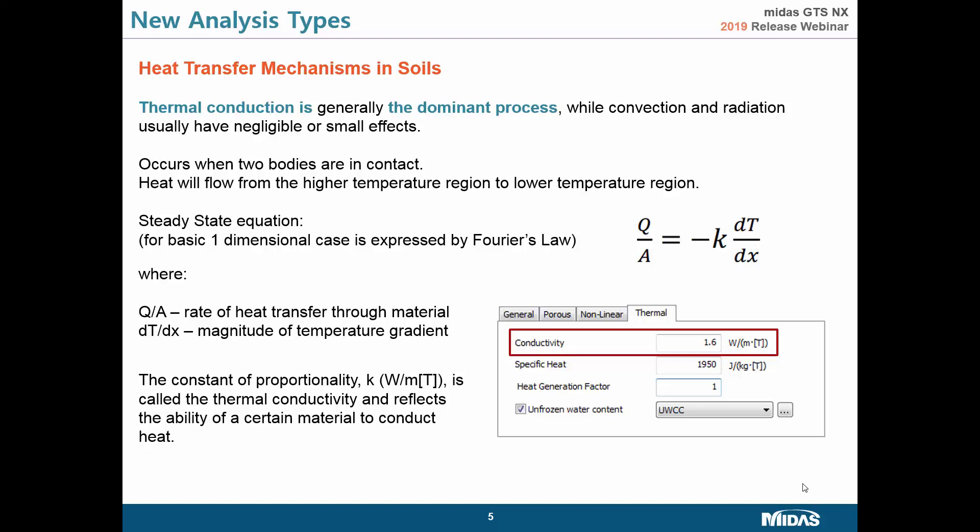Thermal conduction occurs when two bodies are in contact, and heat always flows from the higher temperature region to the lower temperature region. To describe this mathematically, we use Fourier's law. For the steady state equation — where material parameters are not varying in time, also called linear heat transfer analysis — Fourier's law applies. The equation is given for the one-dimensional case: Q divided by A on the left side, where A is area and Q is heat, giving rate of heat transfer. On the right side is the magnitude of the temperature gradient, and parameter K is defined as the constant of proportionality, reflecting the material's ability to conduct heat.